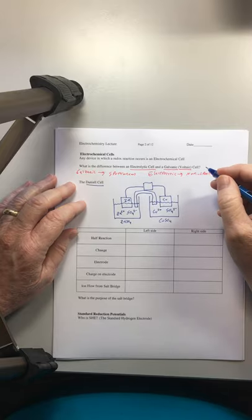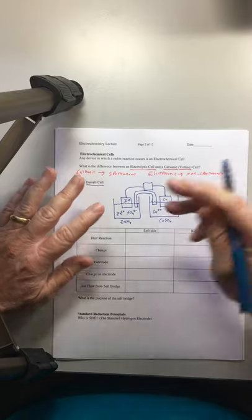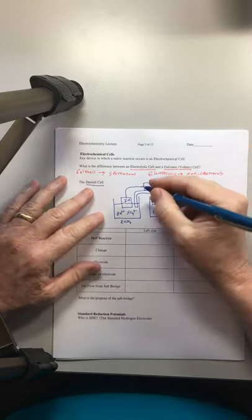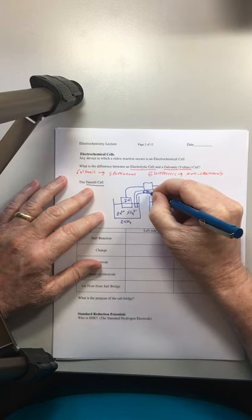The final piece to this picture is something to complete the circuit, which we'd normally call a salt bridge. The salt bridge itself will need to contain a soluble salt, something like KNO3.